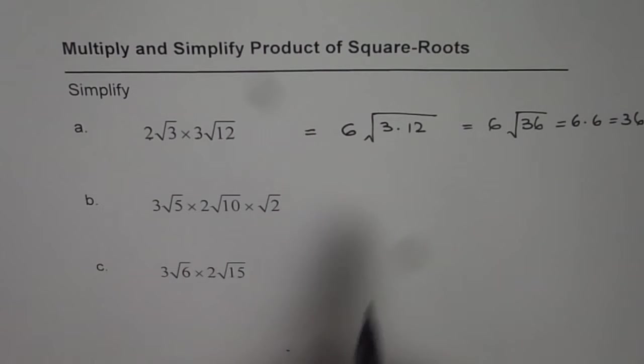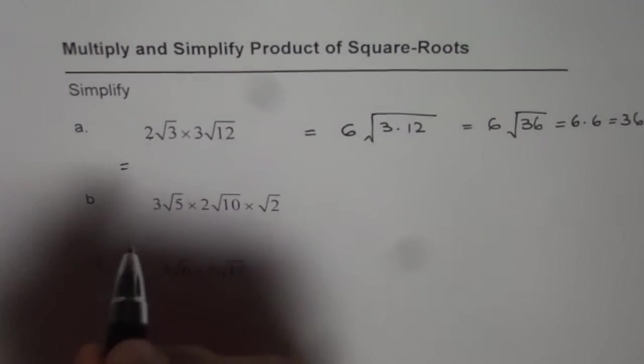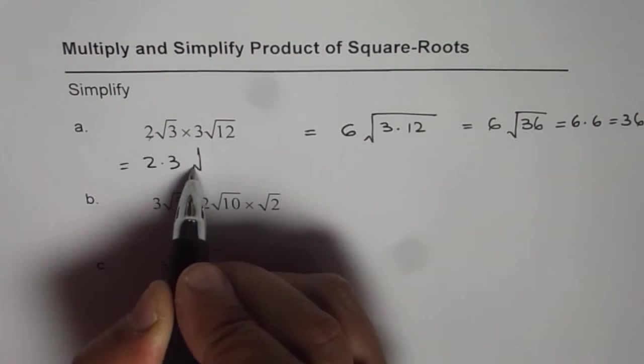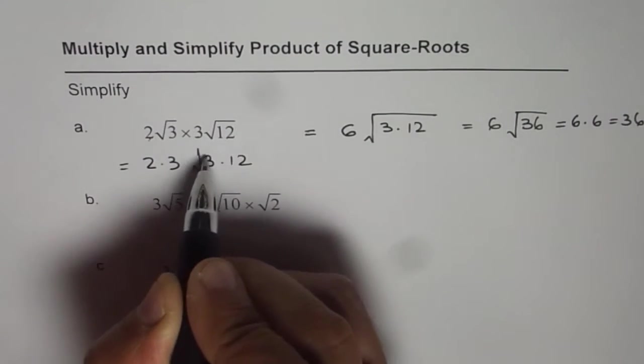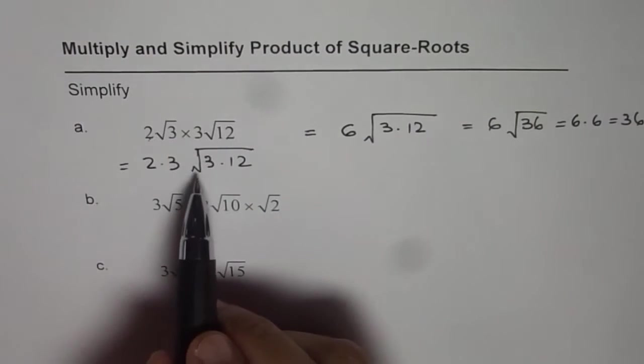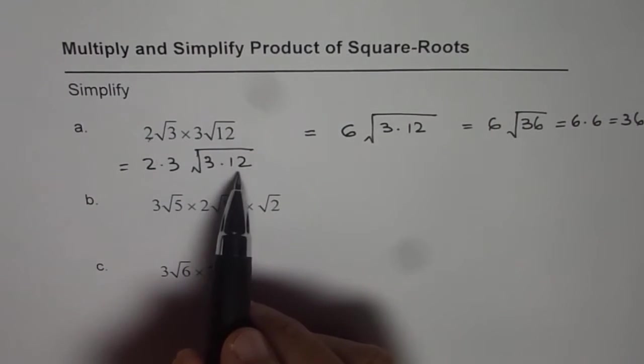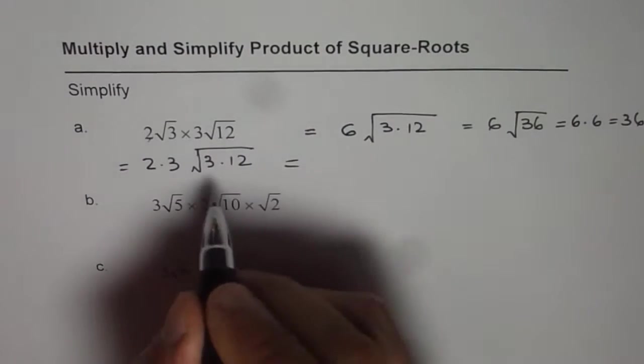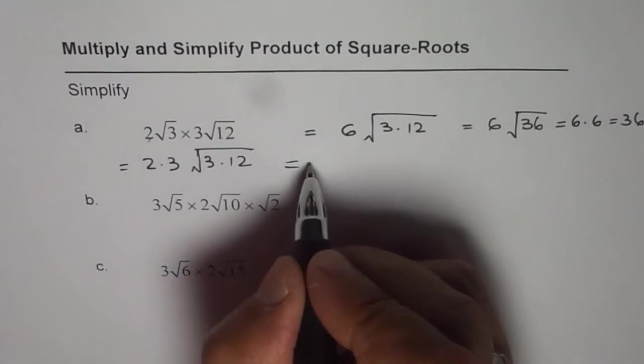The other way is when you multiply, let me just show you steps here. 2 times 3 that is outside. Inside we get 3 times 12. Now whenever we are trying to find square root, we can actually factor so that we get two similar factors and we can take one of them out. So I will show you this technique now.